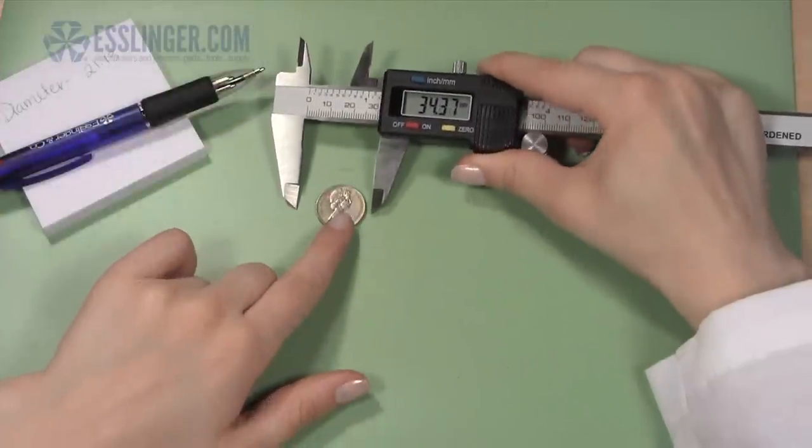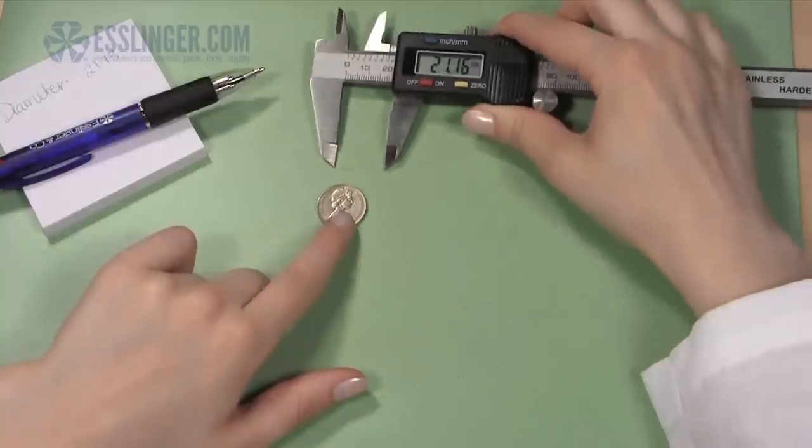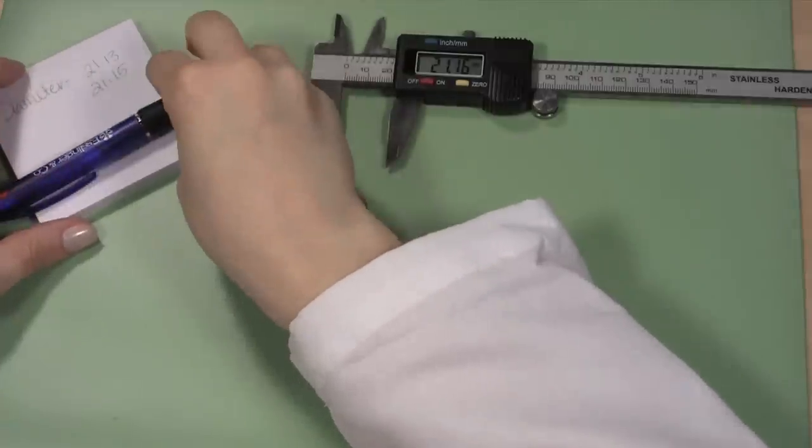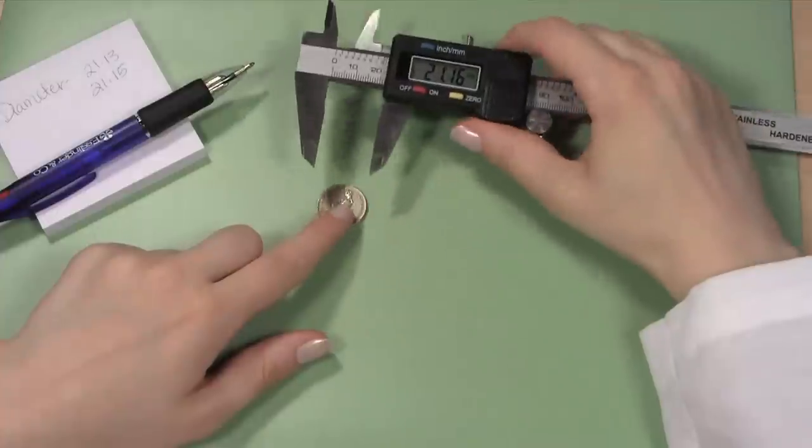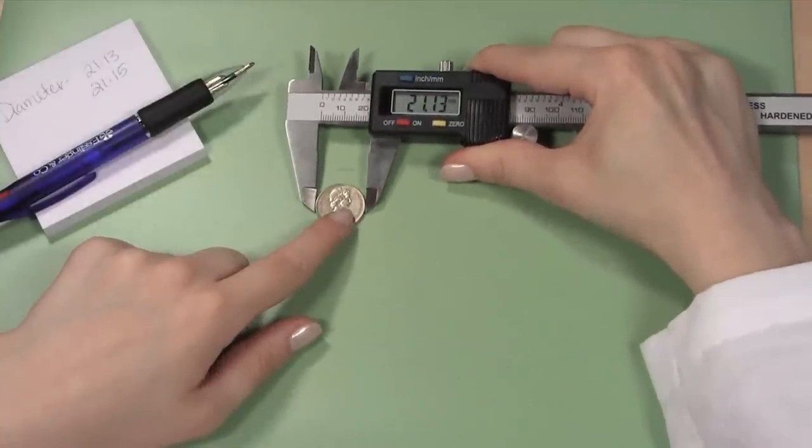Repeat this process and measure the diameter of the coin at least two more times so you can be sure that you have an accurate diameter measurement. If the coin's edges are worn down, you should be extra sure to take multiple measurements and get an average diameter.